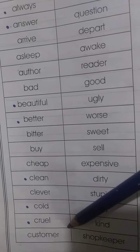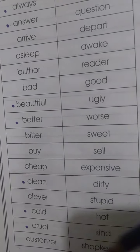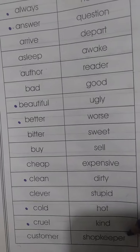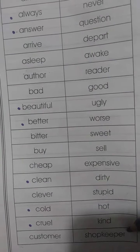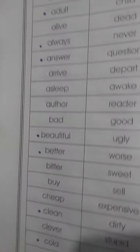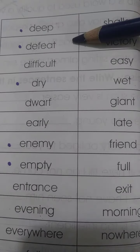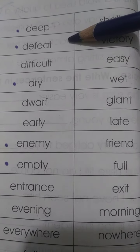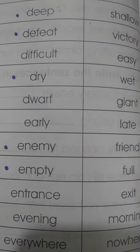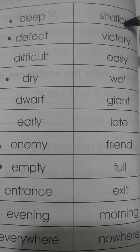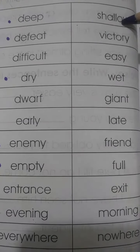'Customer' — joh khariidnye wala hoata hai, meaning the one who buys. Antonym is 'shopkeeper' — joh ke bêchnye wala hoata hai, meaning the one who sells. 'Deep' — ghera. Antonym is 'shallow' — yianni joh oopar oopar se ho, meaning surface-level.